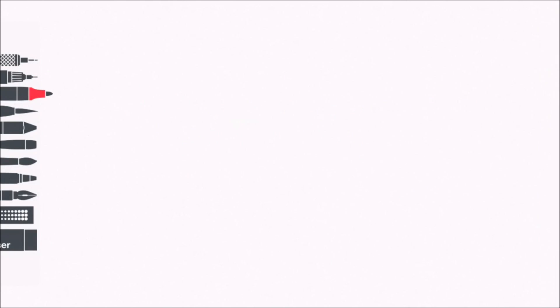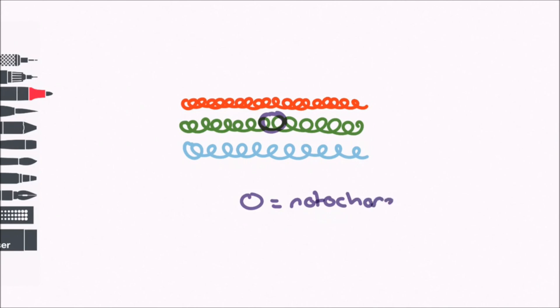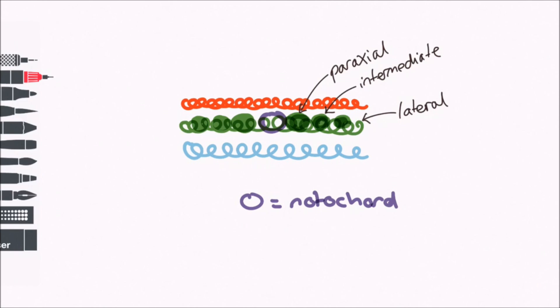In the previous video, we mentioned the notochord induces other changes in the embryo, and the first is related to the mesoderm. Let's look at this from a transverse perspective. As the notochord forms and elongates longitudinally, the adjacent mesoderm multiplies to form three longitudinal parallel columns either side of the notochord. These are called the paraxial mesoderm, the intermediate mesoderm, and the lateral mesoderm. We will come on to their significance later.